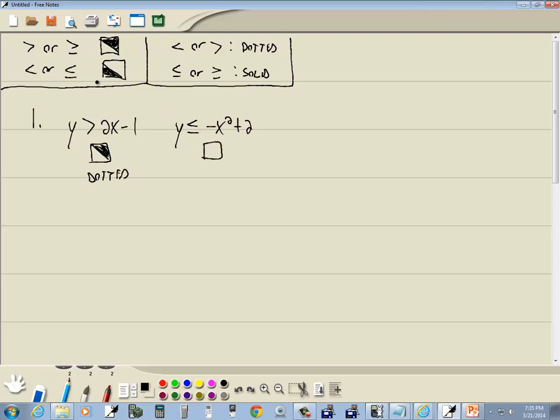This one over here is a less than or equal to. Less than or equal to is a lower left-hand triangle. And less than or equal to says we want a solid line. We're going to put this on y1 and this on y2.